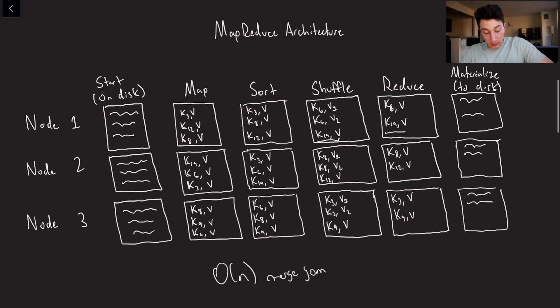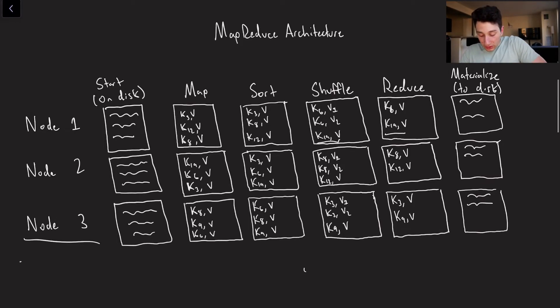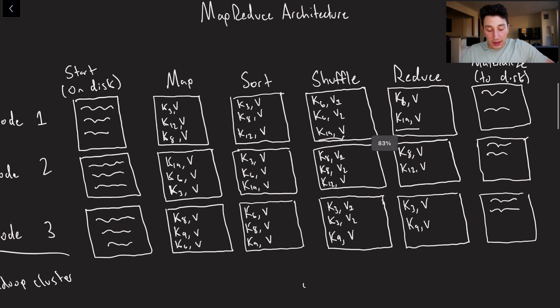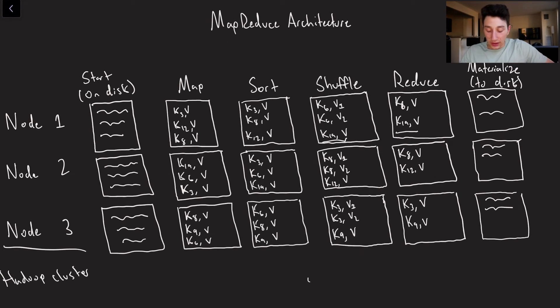Imagine we've got these three nodes in our Hadoop cluster. What this graph is basically showing is through the stages of an individual MapReduce job, how the actual data looks different on every single node.